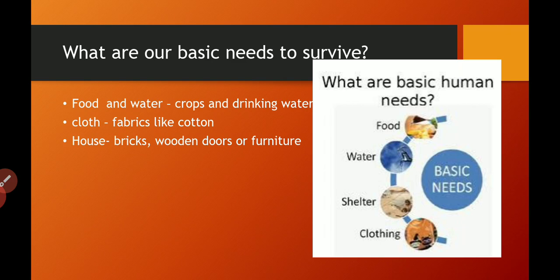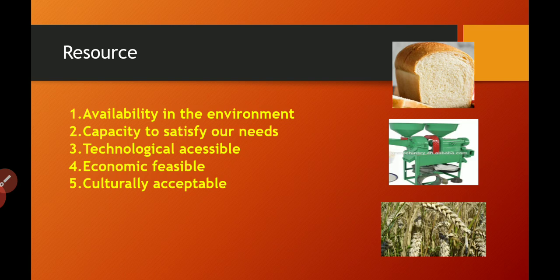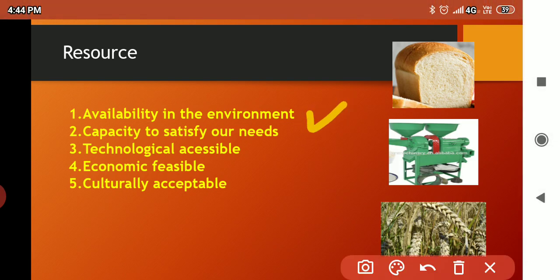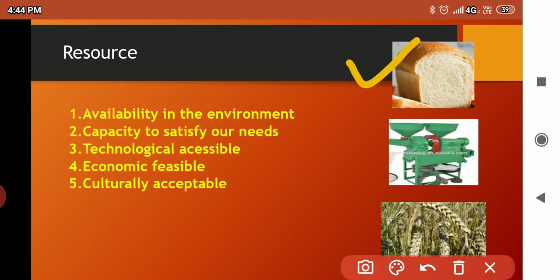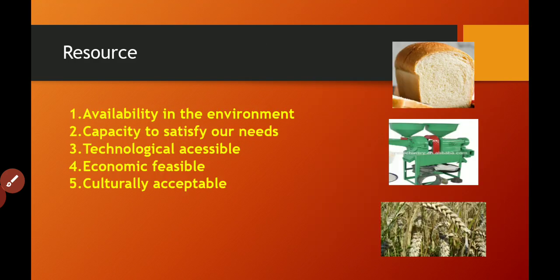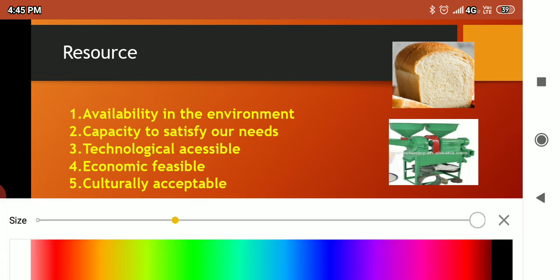So what is a resource? There are five main factors which are important to make any material into a resource. The first factor is availability in the environment. For example, if we take the example of bread, the process starts from crops — wheat grain. Wheat is available in the environment; it can be grown and harvested, and it has the capacity to fulfill our basic needs.